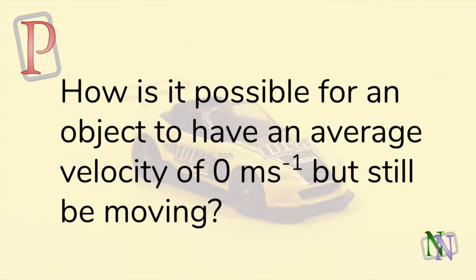We start with a puzzle. How is it possible for an object to have an average velocity of 0 m per second, but still to be moving? The solution will be given near the end of the video.